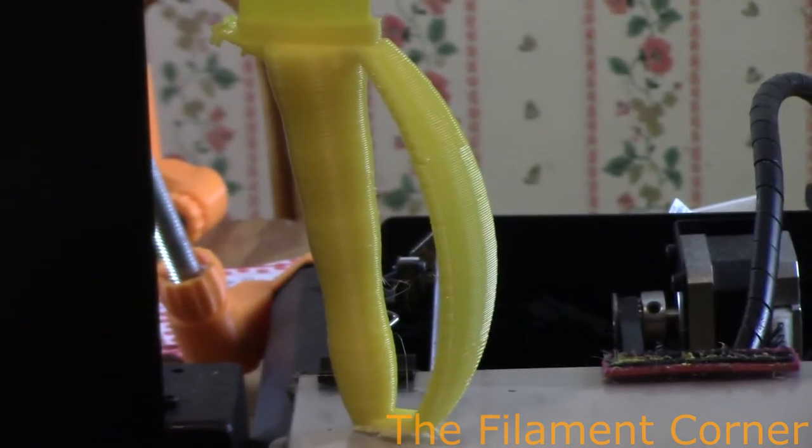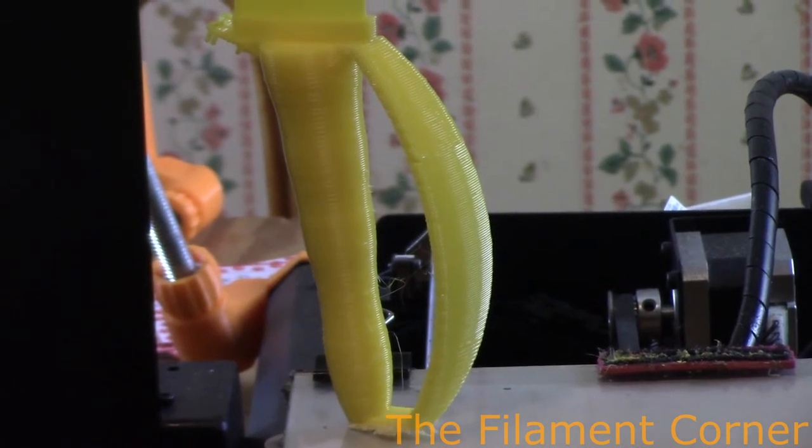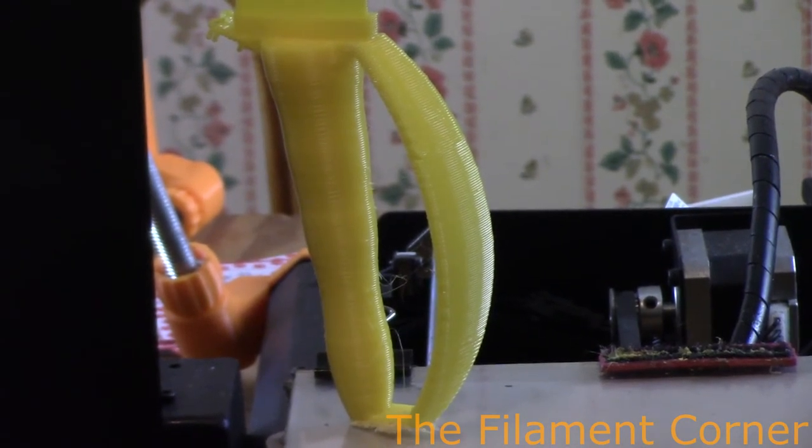So let me zoom in on the handle. Now this is in ABS. I don't normally print much in ABS. I do what needs to be in ABS. Most of the time I just use PLA. And I like PETG too. But I normally don't use ABS, especially on something like this.